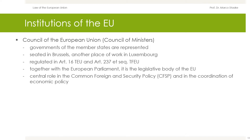The governments of the member states are represented in the Council of the European Union. It is called the Council of Ministers because ministers from the 27 member states meet in Brussels or Luxembourg. The Council is standardized in Article 16 TEU; more detailed provisions are contained in Articles 237 following TFEU. Together with the European Parliament, the Council of the European Union — also called Council of Ministers — is the legislative body of the European Union, and plays a central role in the common foreign and security policy and in the coordination of economic policy.